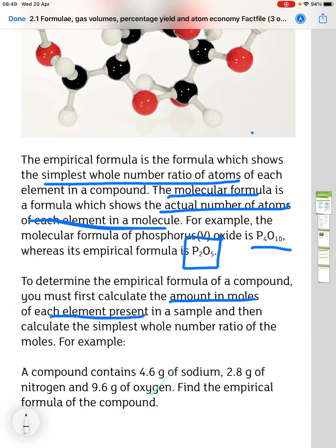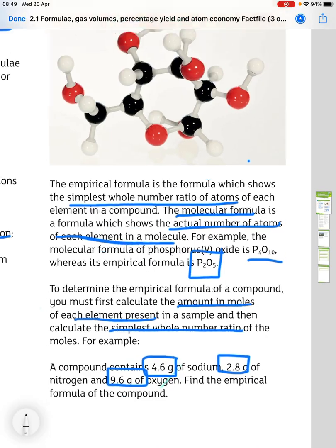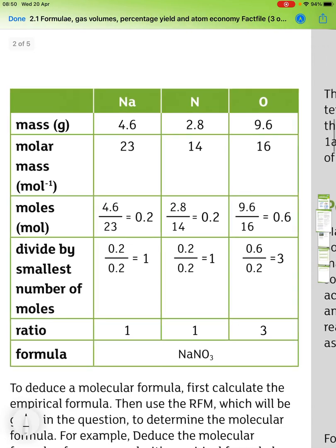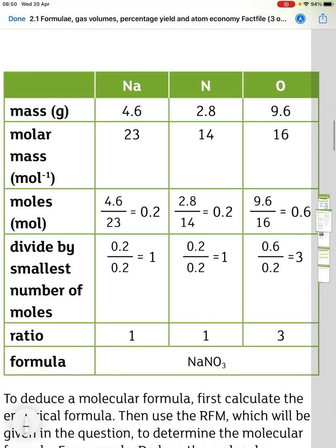To determine the empirical formula of a compound, you must first calculate the amount in moles of each element present in a sample, and then calculate the simplest whole number ratio of the moles. For example, a compound contains 4.6 grams of sodium, 2.8 grams of nitrogen and 9.6 grams of oxygen. Find the empirical formula.